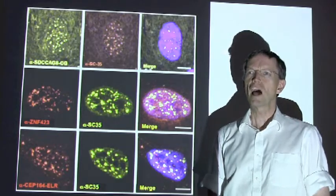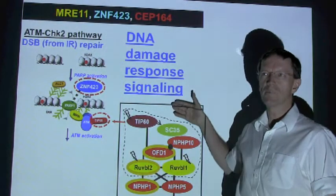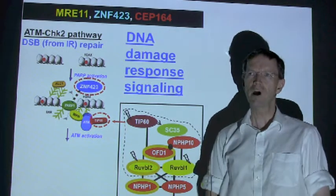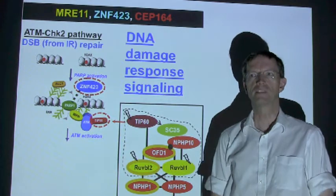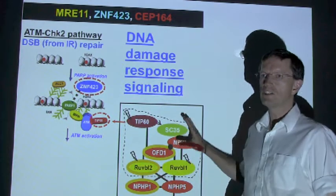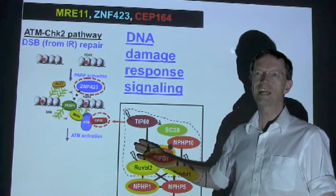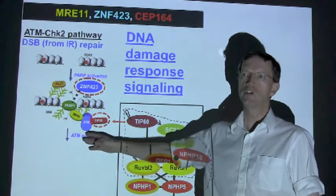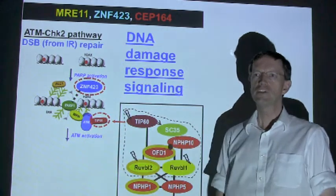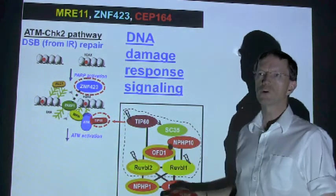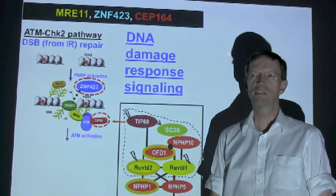To our surprise, we found that all three genes play a role in DNA damage response signaling, thereby implicating yet another signaling pathway in disease mechanisms of ciliopathies. We show that NPHP10 associates with components of the so-called TIP60 complex, which is a direct activator of the DNA damage response protein ATM. In addition, other ciliopathy proteins occur within protein complexes that contain DNA damage response proteins.